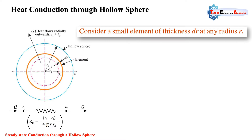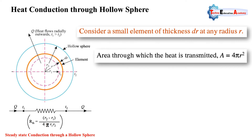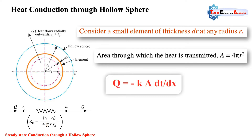Consider a small element of thickness dr at any radius r from the origin of the hollow sphere. Here you can see it is highlighted with an orange color circle. The area through which heat is transferred — as we know, the area of a sphere is 4πr².